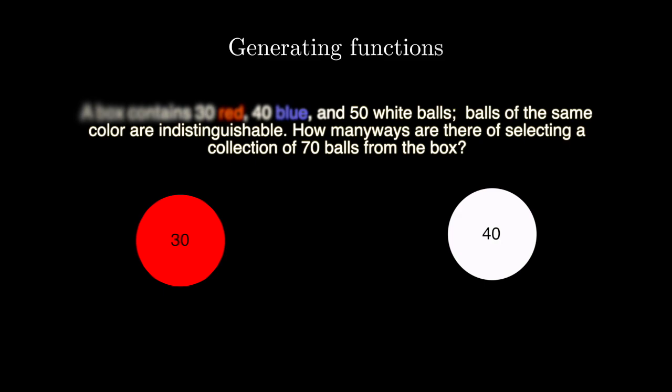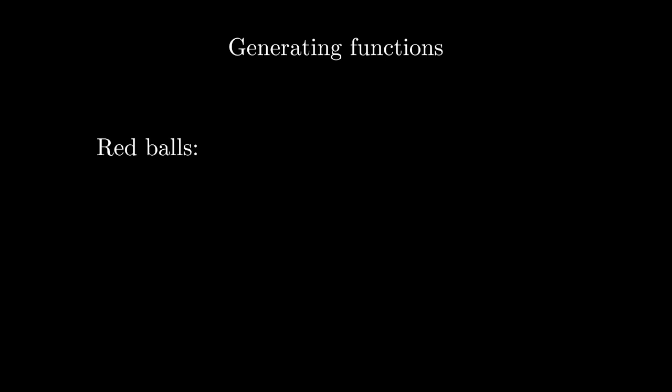We can encode the information we have about the balls using polynomials. Here is how it works. We can take any number of red balls ranging from 1 to 30, so let's encode it with this expression. Similarly, we can encode the other balls.